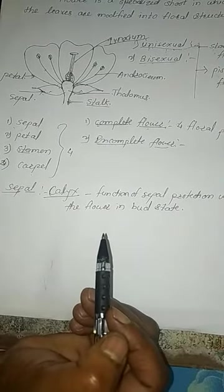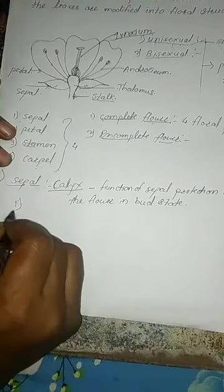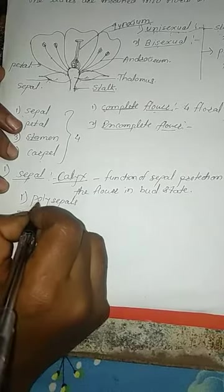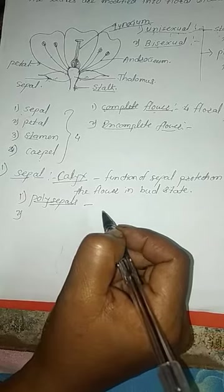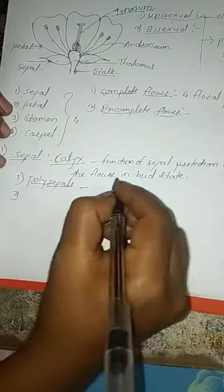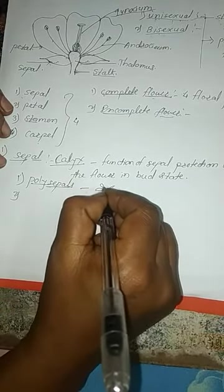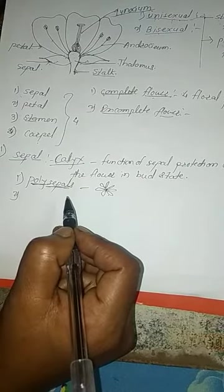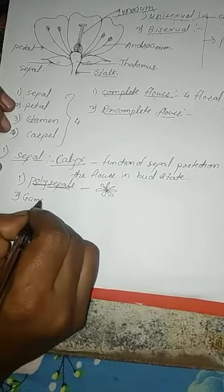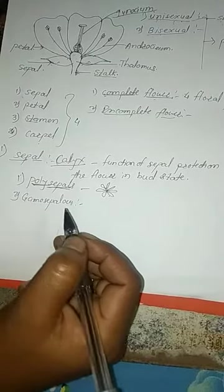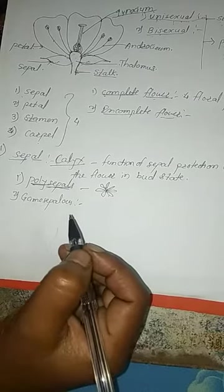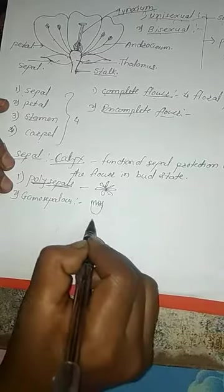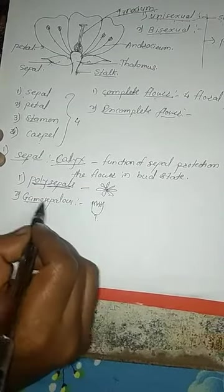There are two conditions related to the calyx. First is polysepalous, which means the sepals are free — they are not fused to each other. Second is gamosepalous, which means the sepals are fused to each other. This condition of the calyx is called gamosepalous.